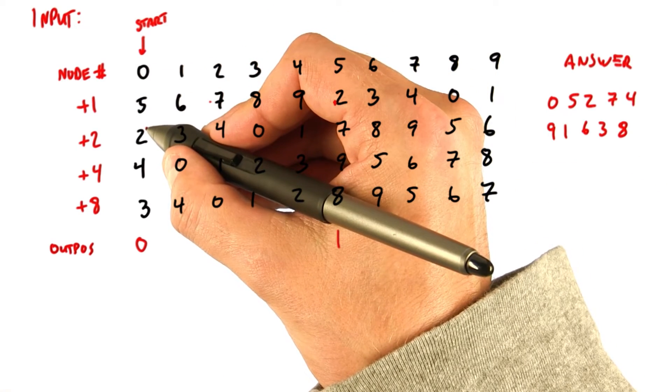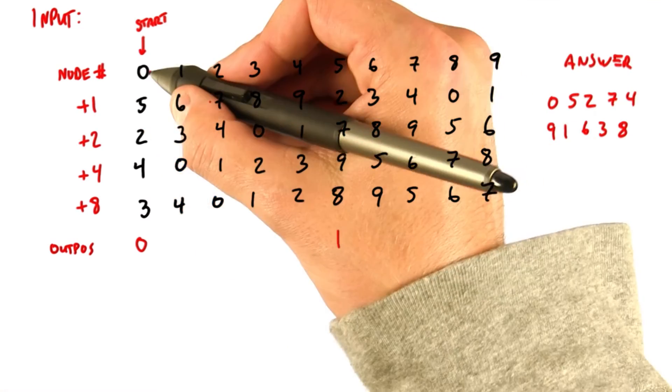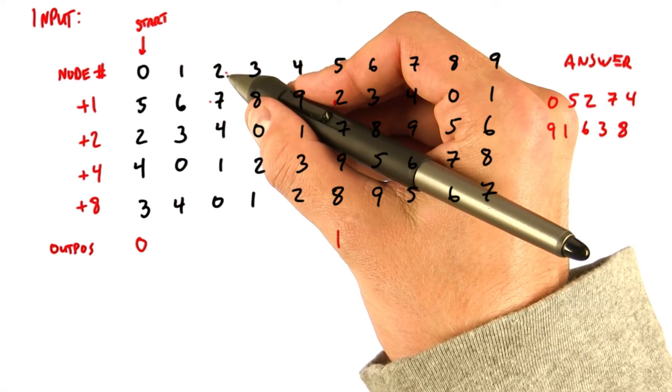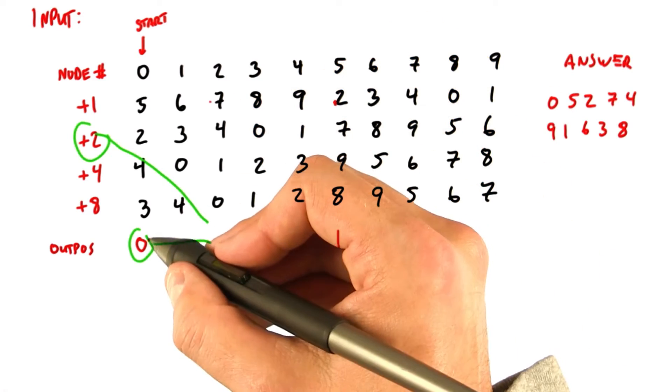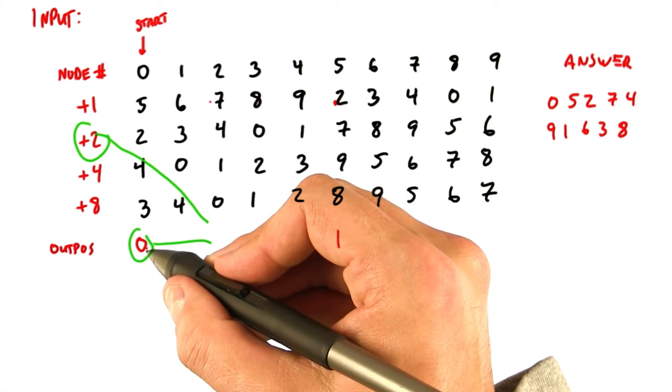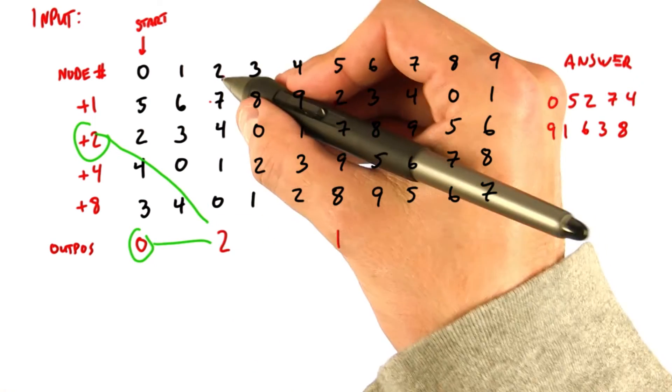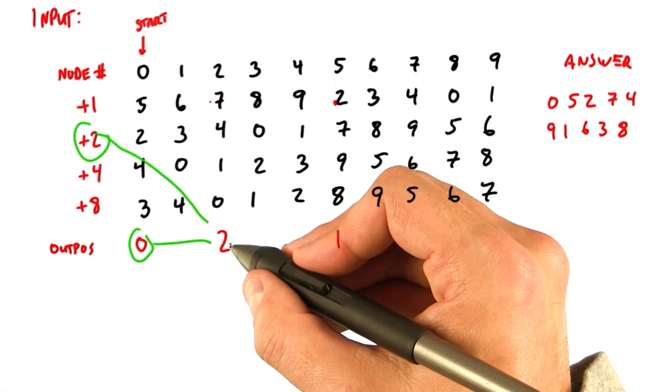So node 0 is going to wake up node number 2. And so where does node 2 write its output? Well, it'll be the sum of where node 0 is at output location 0, and we know we're two hops away. So when we add those two up, we know that node 2 will be written to position number 2.